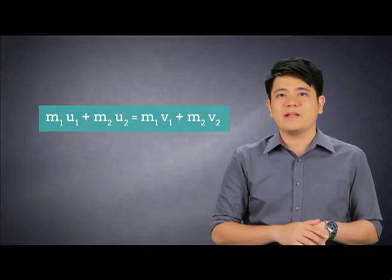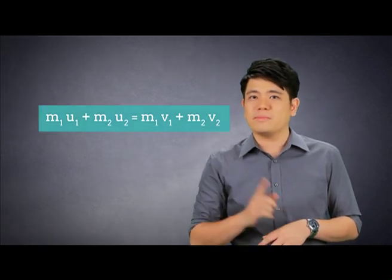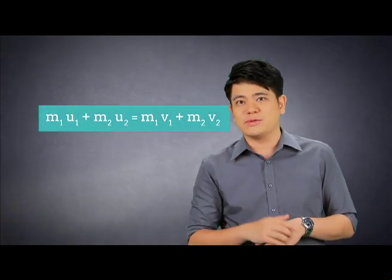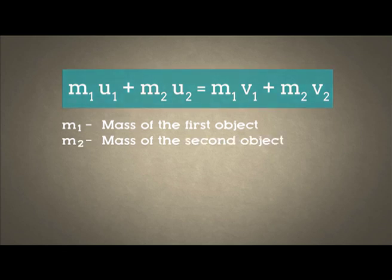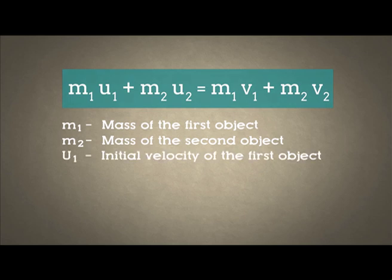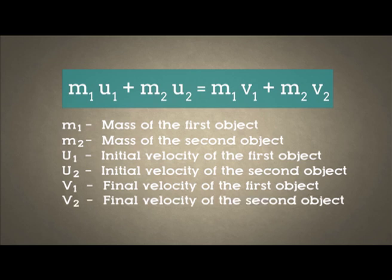M1U1 plus M2U2 equals M1V1 plus M2V2. Where M1 is the mass of the first object and M2 is the mass of the second object. U1 is the initial velocity of the first object and U2 is the initial velocity of the second object. V1 will be the final velocity of the first object and V2 will be the final velocity of the second object.